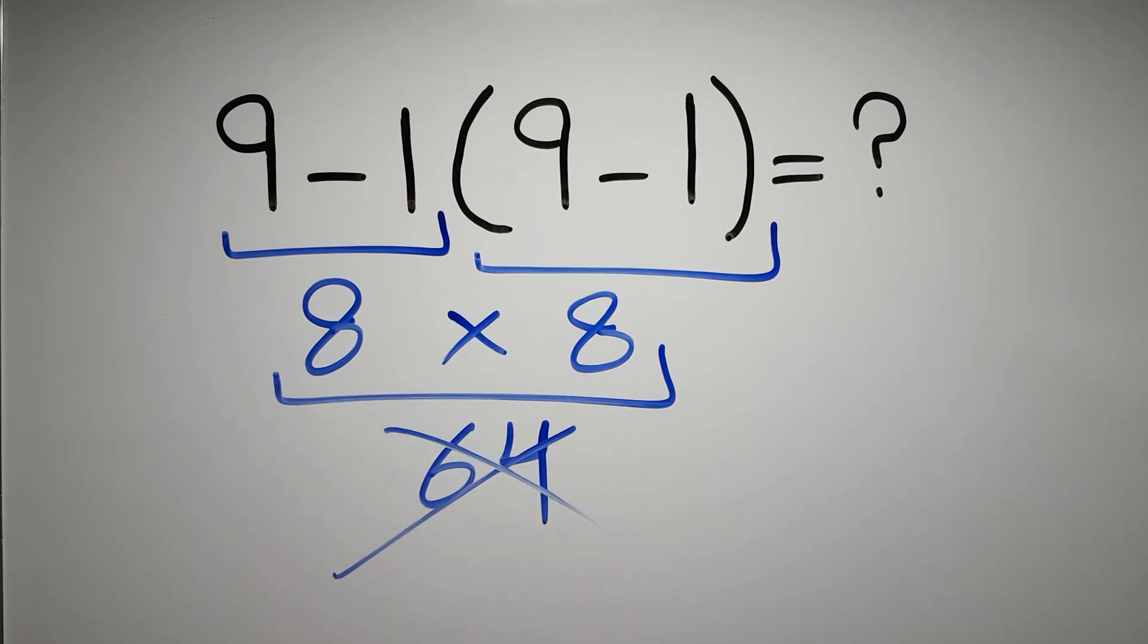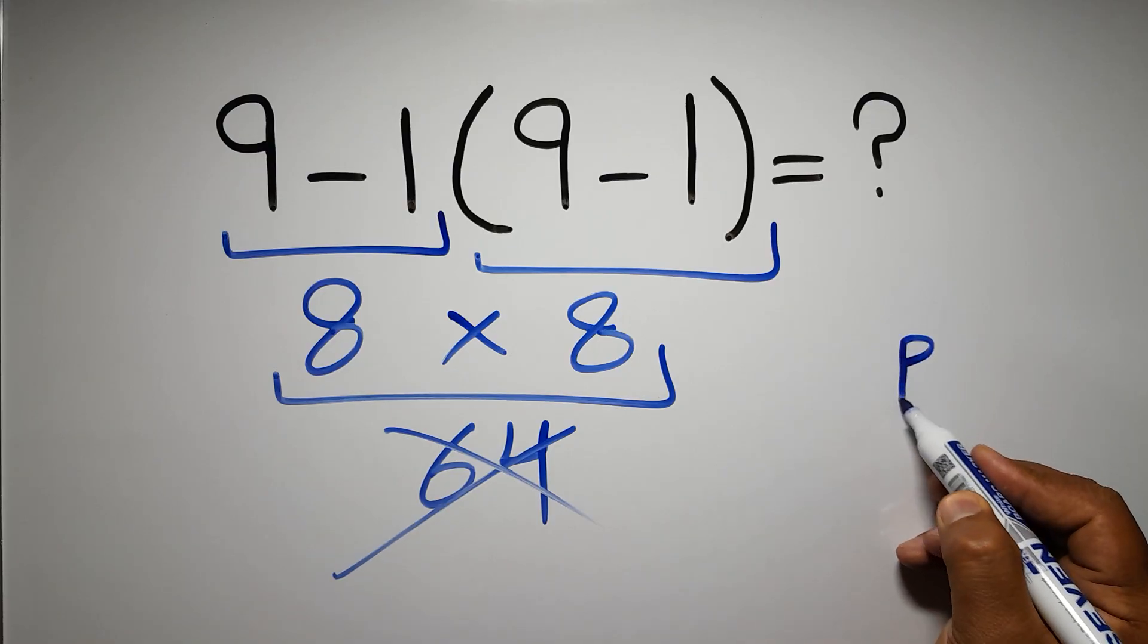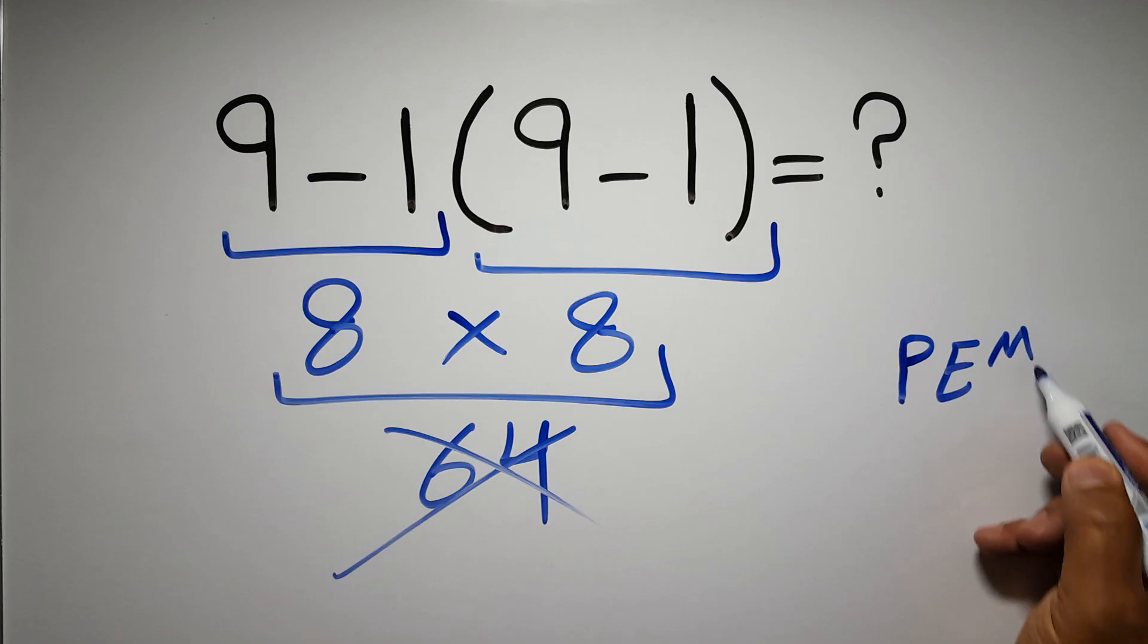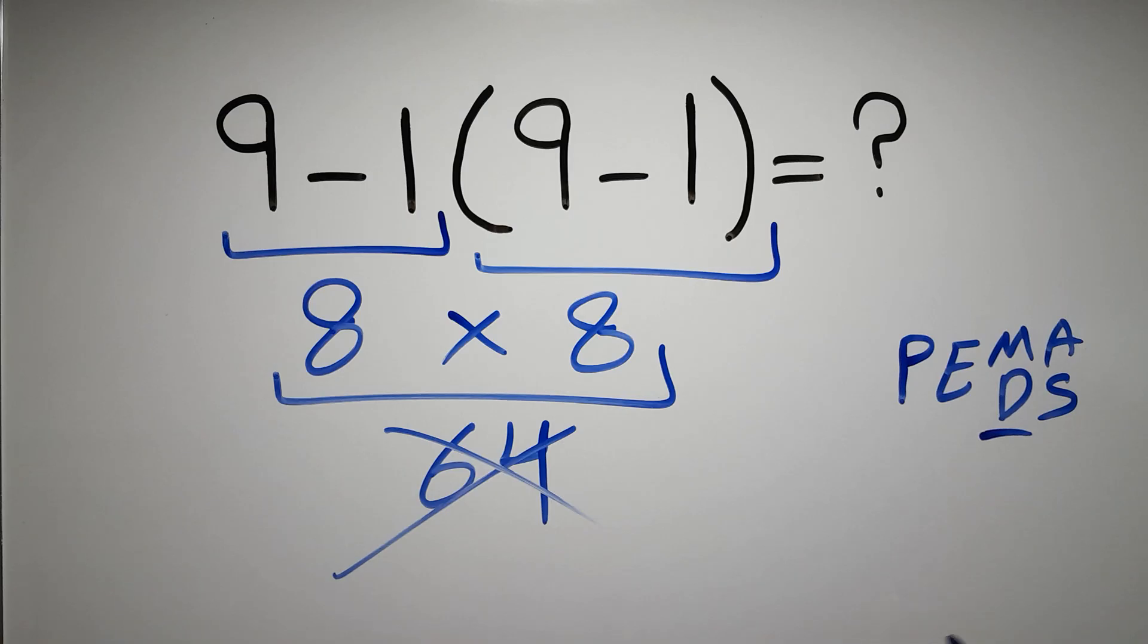But this answer is not correct, because according to the order of operations, first we have to do parentheses, then exponents, then multiplication or division, and finally addition or subtraction. Remember that multiplication and division have equal priority, and we have to work from left to right, and the same applies to addition and subtraction.